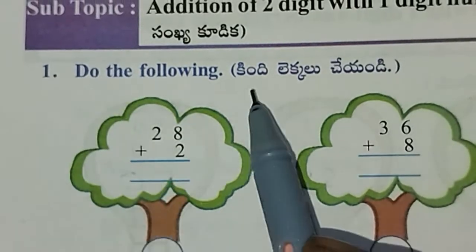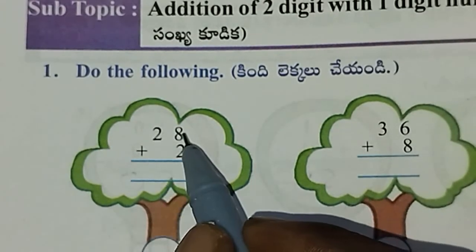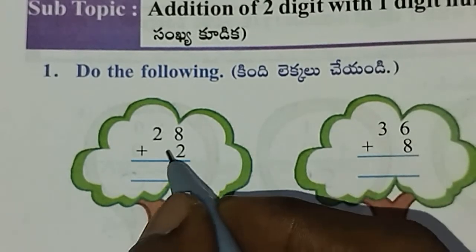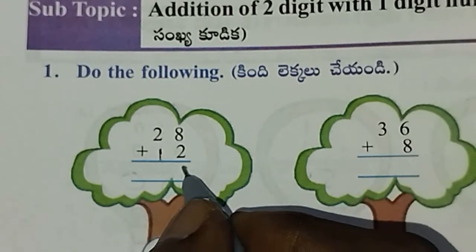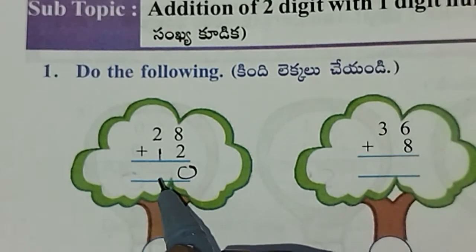Okay, let's start. We have 8 plus 2. 8 plus 2 is 10, so 1 and 0. Next, this is 2 plus 1, which equals 3.